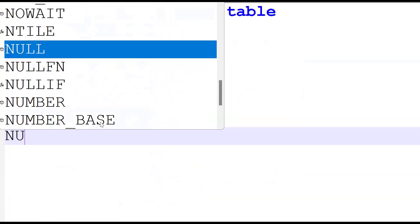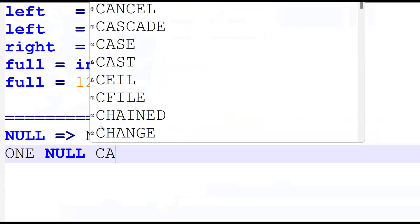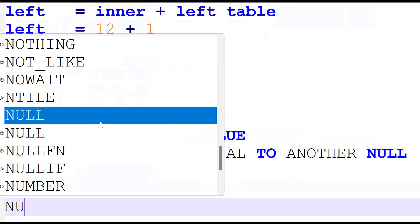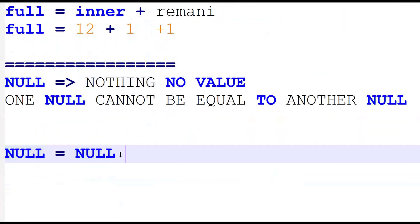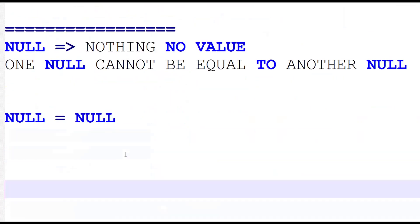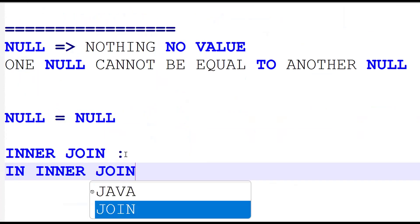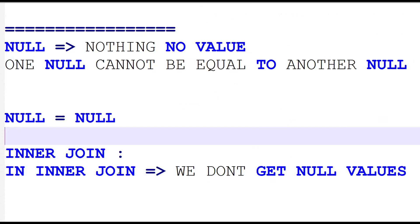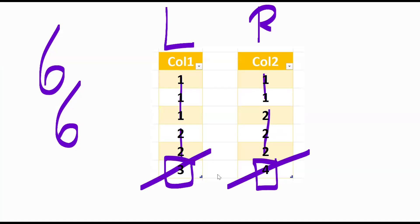Now let's discuss nulls. Null means no value. One null cannot be equal to another null — there is no value, so you cannot compare them. This is important. In inner join, we don't get null values because null cannot match with another null — it is false. We discussed the logic without nulls; now nulls will be considered.